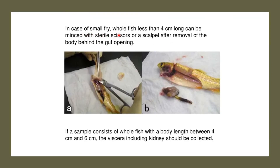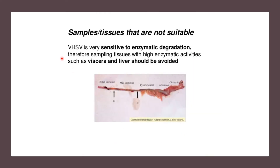For small fry, whole fish less than 4 cm can be minced with sterile scissors or a scalpel after removal of the body behind the gut opening. For fish with body length between 4 and 6 cm, the viscera including the kidney should be collected. Tissues with high enzymatic activity such as the viscera and liver should be avoided, as the virus is very sensitive to enzymatic degradation.